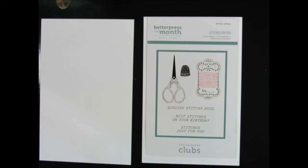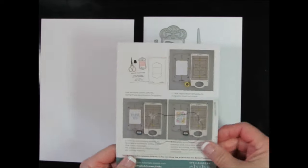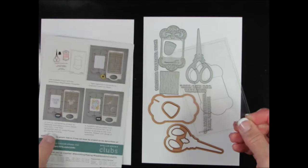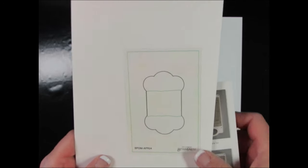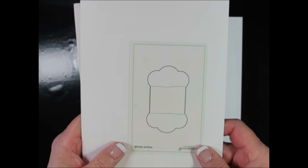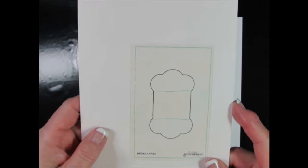This one is called Stitched for You and it has six different Better Press plates as well as three cutting dies. The cutting dies cut out the scissors, which are so cute. It also has a registration plate, this clear piece that I'm going to show you how that works. It also cuts out the thimble and the outside of this embossing floss bobbin.